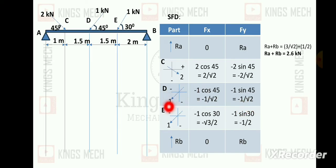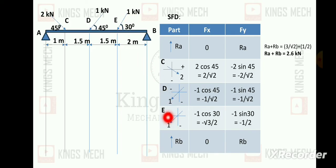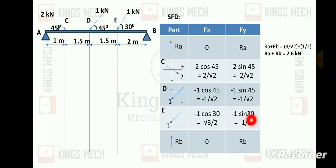For point E, the direction is 1 kN at 30 degrees. Both x and y magnitudes are negative, so it is minus 1 cos 30 and minus 1 sin 30, which equals minus root 3 by 2 and minus 1 by 2.